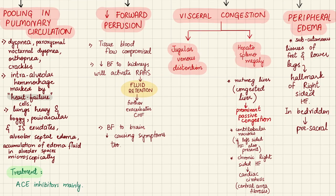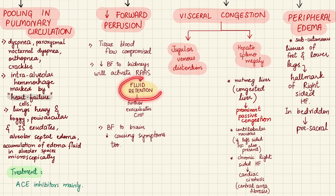Treatment includes ACE inhibitors to clear excess fluid from the circulation. Another consequence of left heart failure is decreased forward perfusion — all tissues supplied by the heart are compromised. Decreased blood flow to the kidneys is particularly detrimental: the kidney, perceiving low blood pressure, activates the renin-angiotensin-aldosterone system to increase fluid retention, further exacerbating heart failure. Decreased blood flow to the brain also causes cerebral symptoms.